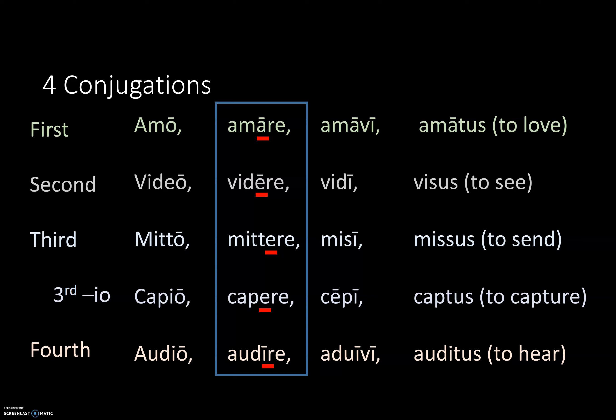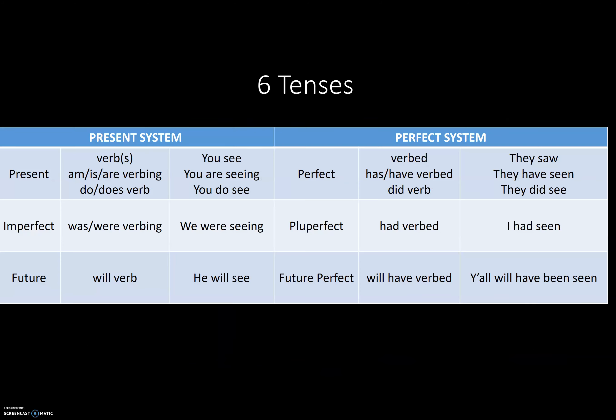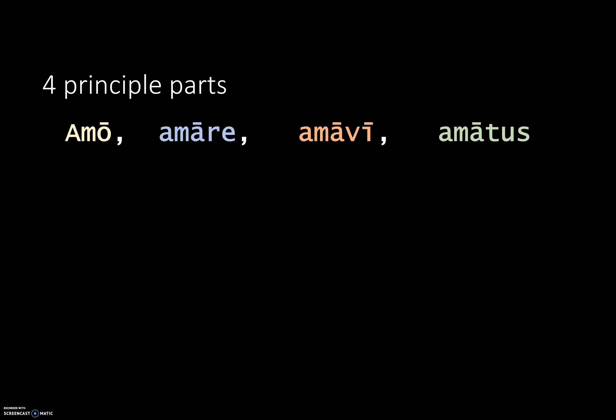Knowing the conjugation is important because it allows you to better identify the tense and mood of the verb being used. There are six tenses in Latin: the present tense (verb/verbing), the imperfect for unfinished or continuous past action (was/were verbing), the future (will verb), the perfect (verbed/has verbed), the pluperfect (had verbed), and the future perfect (will have verbed).